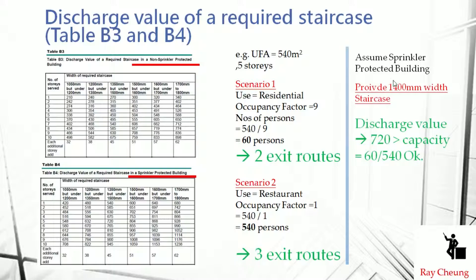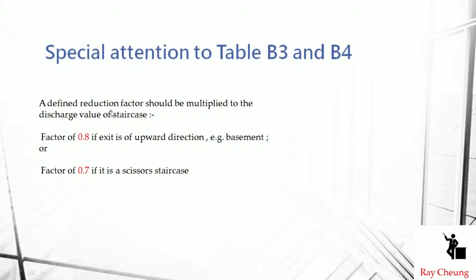For example, if you provide one staircase with a width of 1,400mm for a five-storey building, the discharge value is 7,020 persons, which is sufficient if the building capacity is 540. When calculating discharge value, pay attention to reduction factors: for a basement staircase, the factor is 0.8; for scissor staircases, the factor is 0.7.